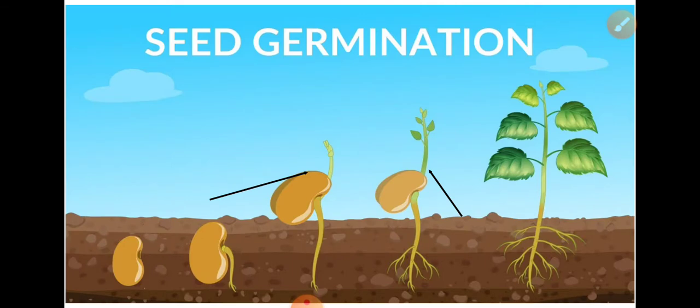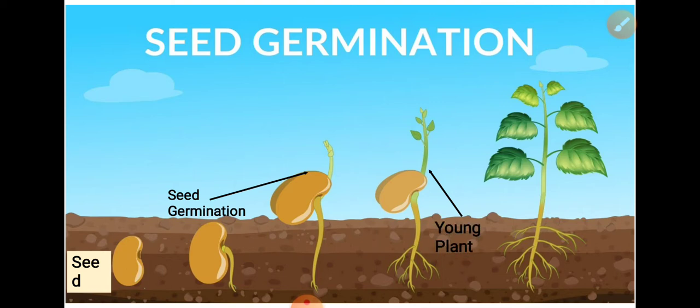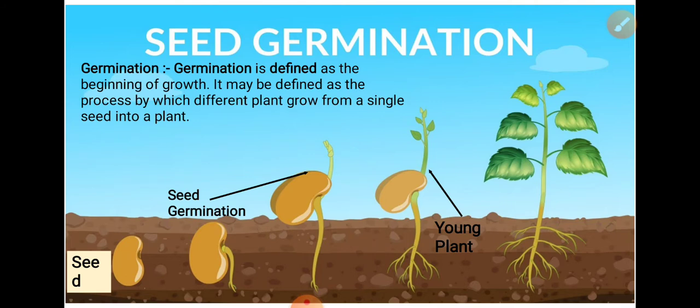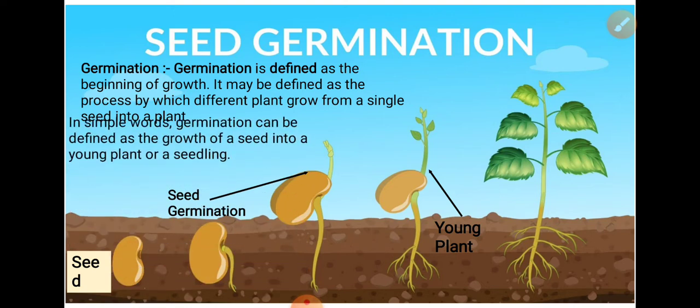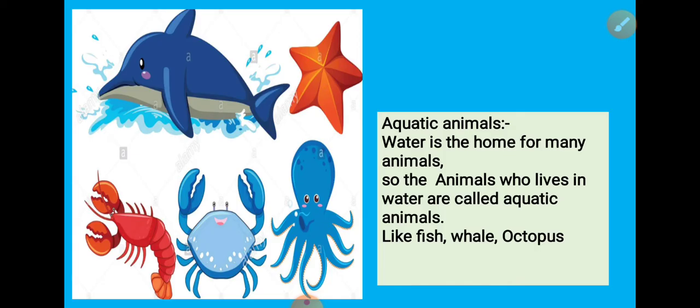Seed germination. You can see a picture of a seed and seed germination, where a young plant is coming out from the seed along with roots. Seed germination is defined as the beginning of growth — the process by which a plant grows from a single seed into a new plant, or simply, the growth of a seed into a young plant or seedling.